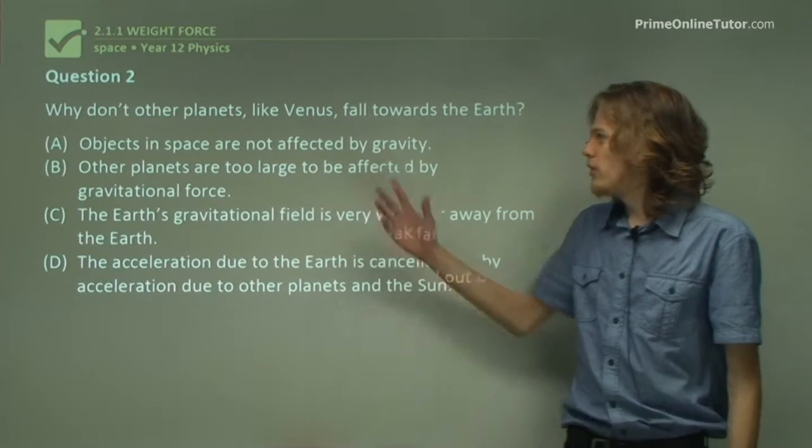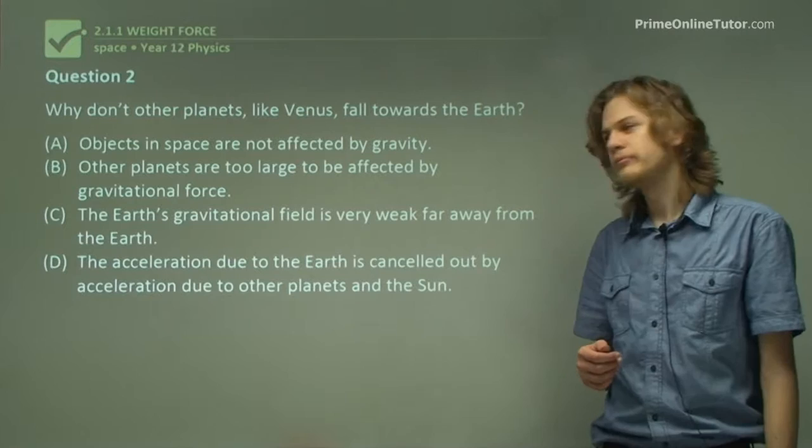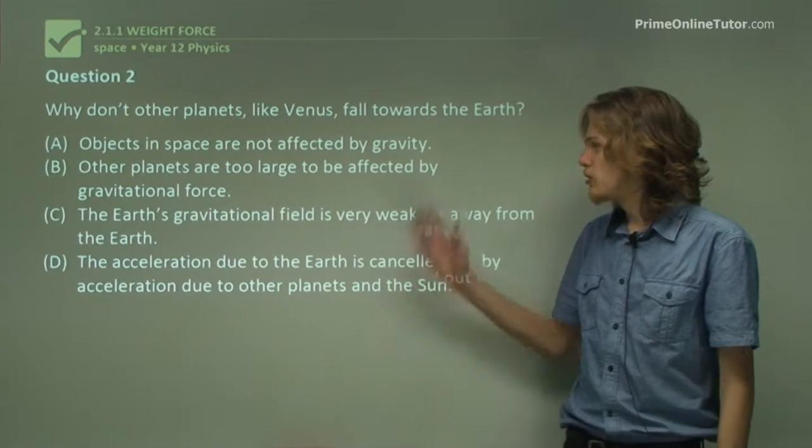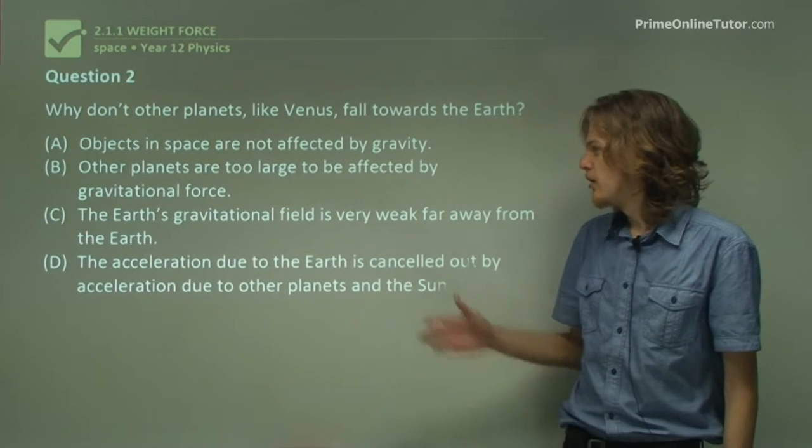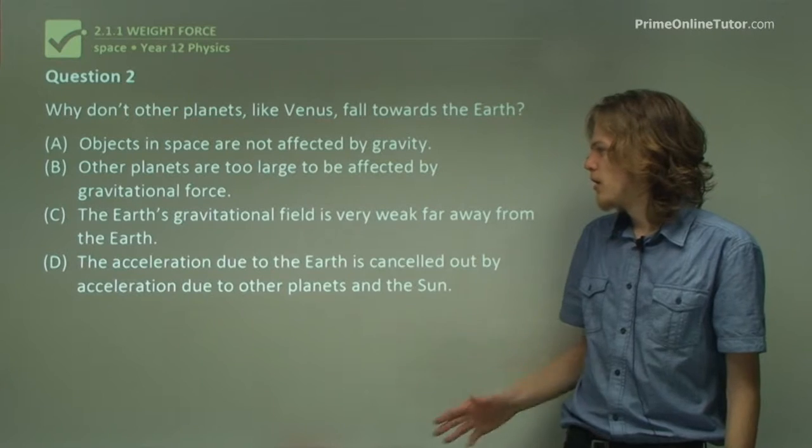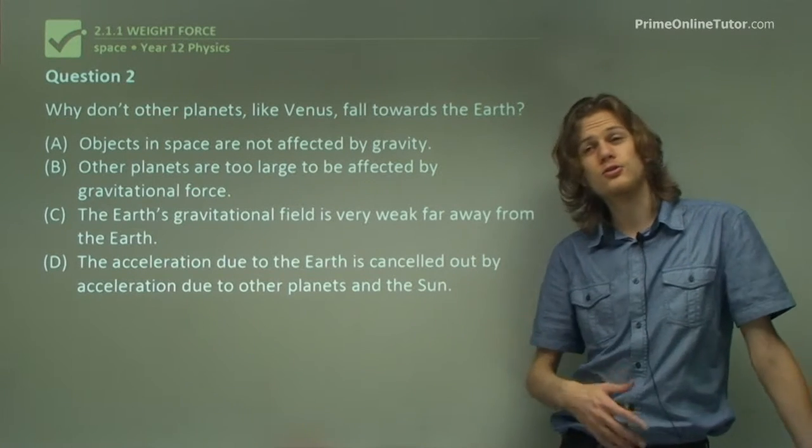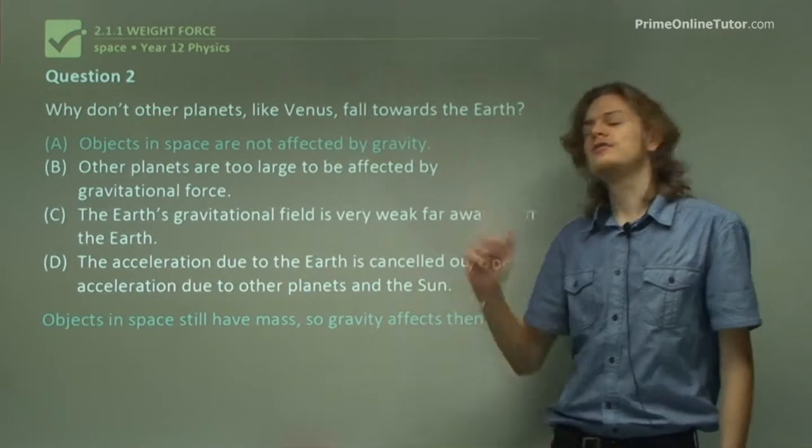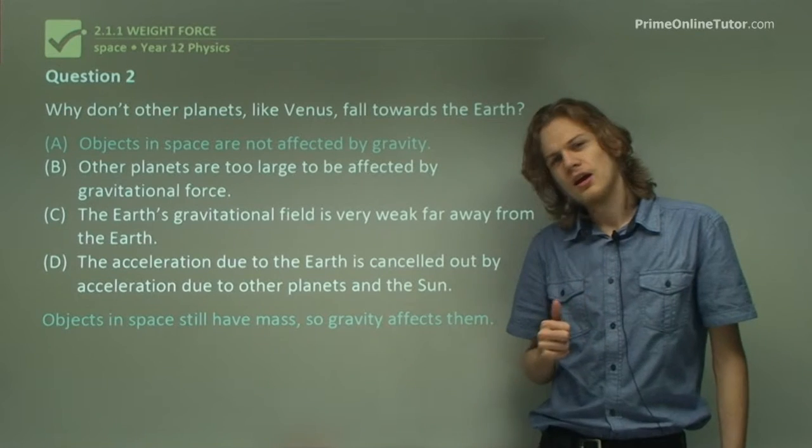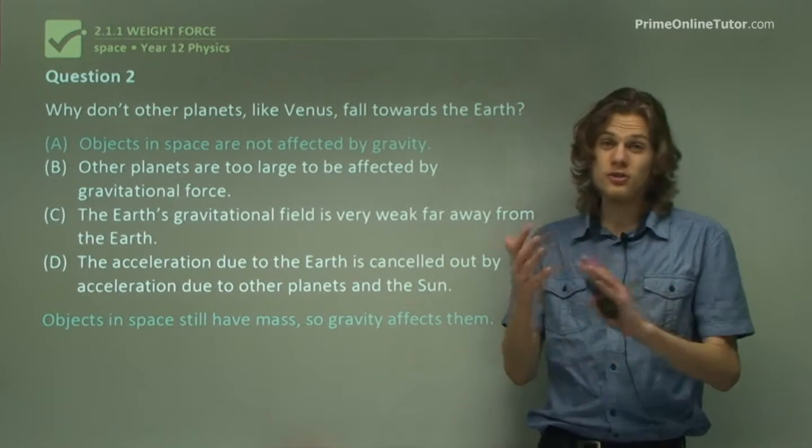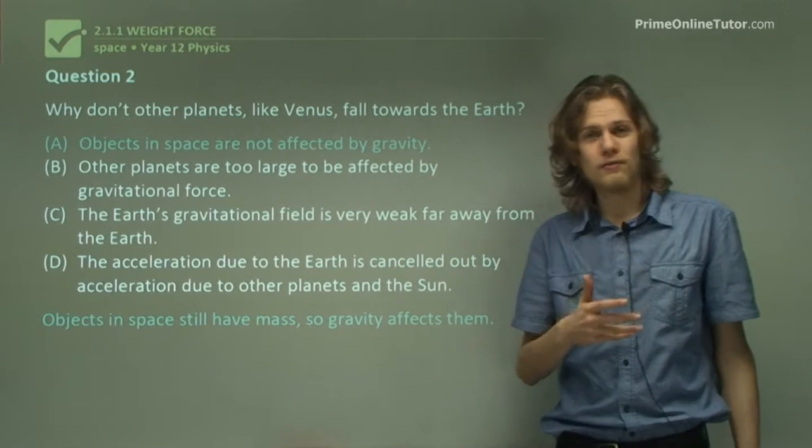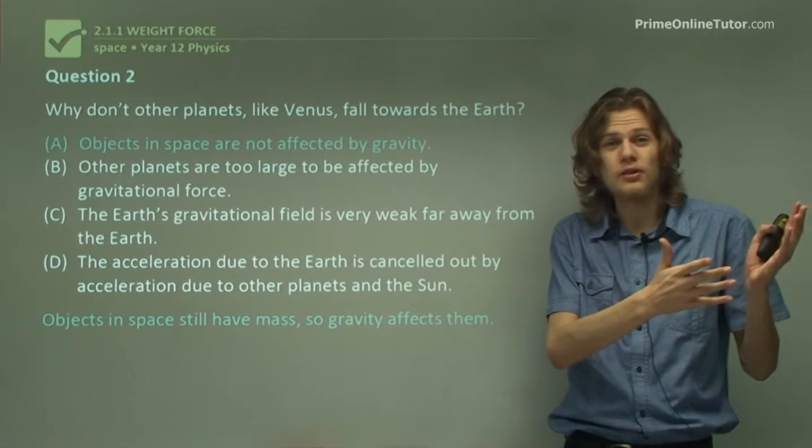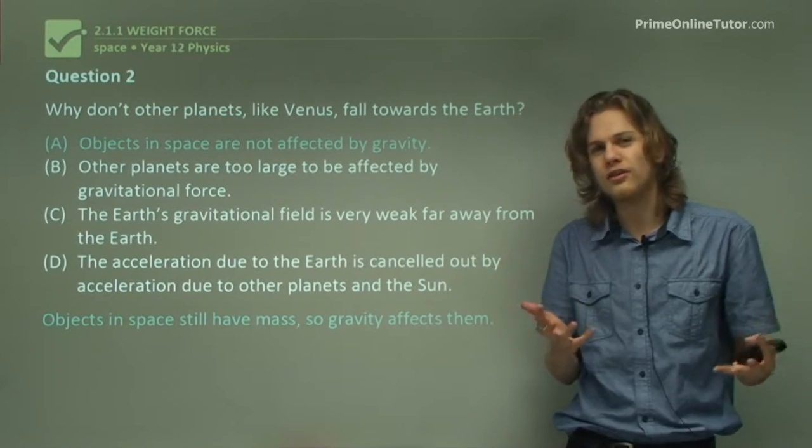Question two. Why don't other planets like Venus fall toward the Earth? We have a few options here. Space objects aren't affected by gravity. Other planets are too large to be affected by gravitational force. The Earth's gravitational field is very weak far away from the Earth. Or the acceleration due to the Earth is cancelled out by acceleration due to other planets. So let's go through our options. A says that objects in space are not affected by gravity. But if you looked back at the slide, you'd notice that the space shuttle, which is in space, is still being affected by gravity, quite strongly in fact. The other thing is that planets orbit the sun due to gravity. So there must be gravitational force acting there. It's not A.